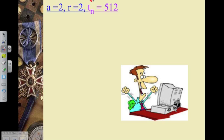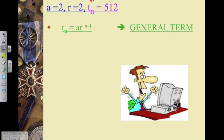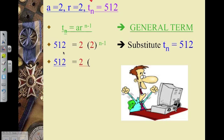Tn represents my last term in this equation. So I'm going to use my geometric general term formula, and I'm going to substitute what I know. Tn is equal to 512, A is equal to 2, and R is equal to 2.